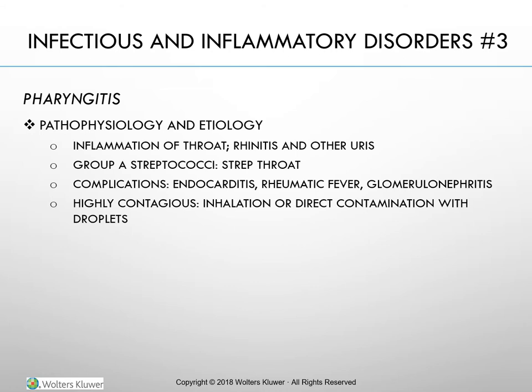Rapid antigen tests can detect strep within minutes by determining that there are foreign substances called antigens in the throat. If positive, treatment can begin right away. This test is not perfect, however, and may miss some strep infections. In this case, the primary health care provider may rely on the throat culture. In addition, there is a rapid DNA test that uses DNA technology to identify strep bacteria in less than a day with equal accuracy and in less time than traditional throat cultures. These tests are done in clinics and physicians' offices. Early antibiotic treatment is the best choice for pharyngitis to treat the infection and help prevent potential complications. Penicillin or its derivatives are generally the antibiotics of choice. Clients sensitive to penicillin receive erythromycin, a cephalosporin such as cephalexin (Keflex), or azithromycin (Zithromax). The antibiotic regimen is generally 5 to 14 days.